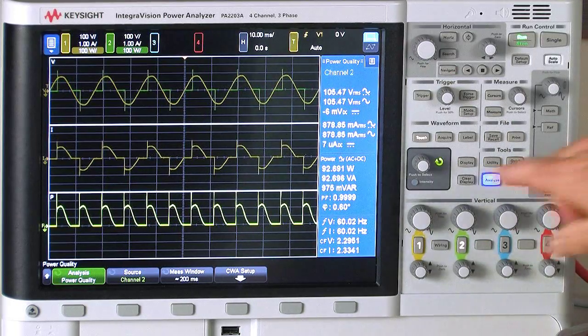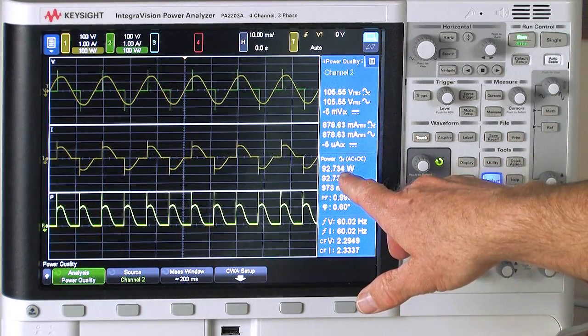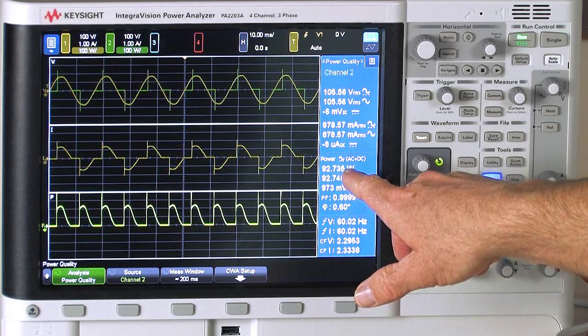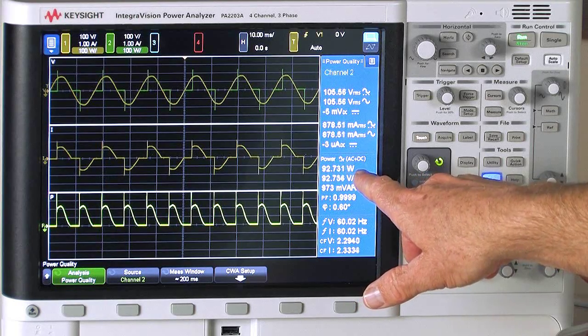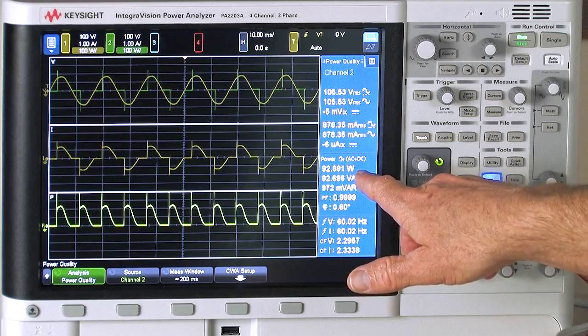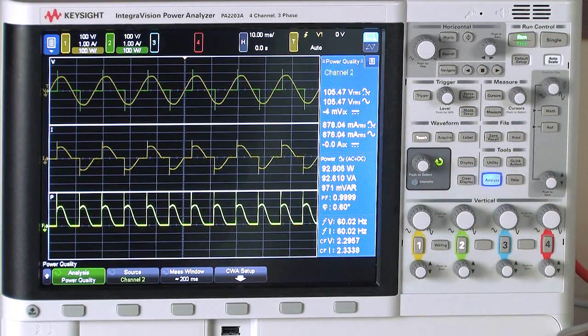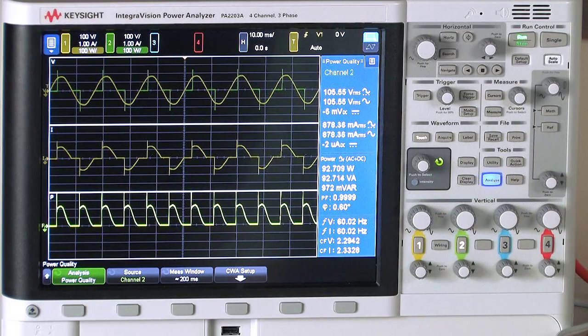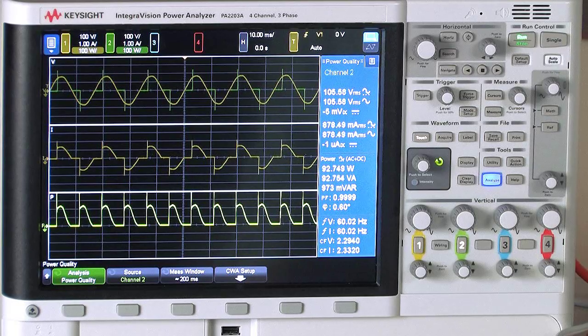So at full power, our incandescent bulbs are consuming about 92 watts, so this is an equivalent of two 60 watt light bulbs. The switch is rated for 600 watts, so we're really testing it on the low end of the efficiency.